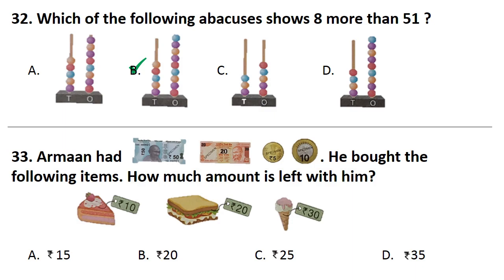Question No. 33. Arman had Rs. 50, 1 Rs. 20, 1 Rs. 5 coin and 1 Rs. 10 coin. He bought the following items. How much amount is left with him? Answer is Option C. Rs. 25.